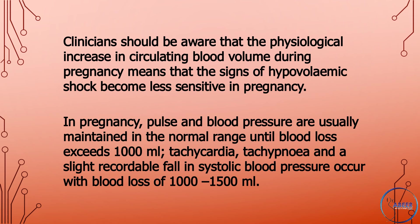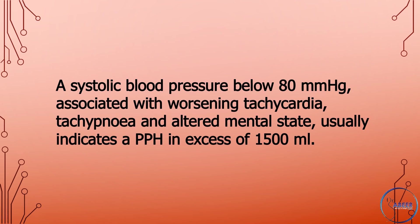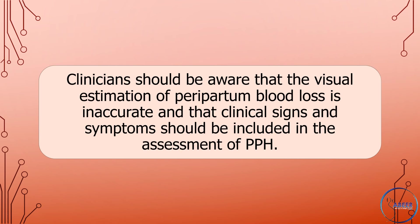Tachycardia, tachypnea, and a slight recordable fall in systolic blood pressure occur with blood loss of 1,000 to 1,500 milliliters. A systolic blood pressure below 80 millimeters of mercury associated with worsening tachycardia, tachypnea, and altered mental state usually indicates a postpartum hemorrhage in excess of 1,500 milliliters. Clinicians should be aware that visual estimation of peripartum blood loss is inaccurate and that clinical signs and symptoms should be included in the assessment of postpartum hemorrhage.